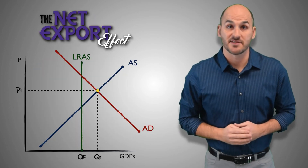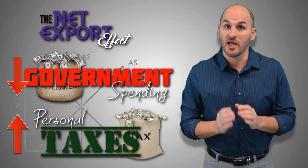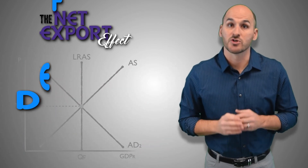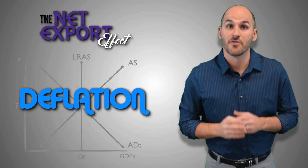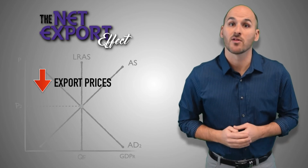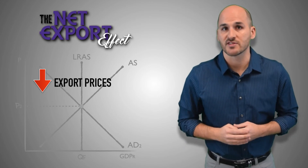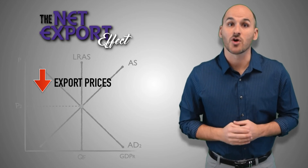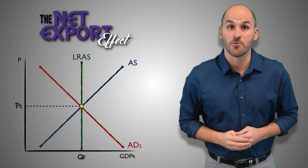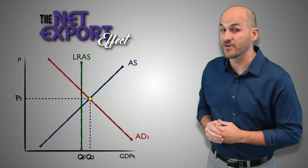When an inflationary gap exists, government can use contractionary fiscal policy to close the gap. However, decreasing government spending, increasing personal taxes, or using a combination of both can lead to a decrease in aggregate demand, which will cause deflation in the economy. This deflation will cause the price of our exported goods to fall in foreign markets everywhere around the globe. Because our exports are now less expensive compared to other goods, foreign consumers will choose to consume more of our exported goods and services and buy fewer expensive products from other markets. This leads our net export balance to move towards a surplus. Ultimately, this boost in exports compared to imports will cause aggregate demand for domestic products to increase, which reduces the effectiveness of the initial contractionary fiscal policy.